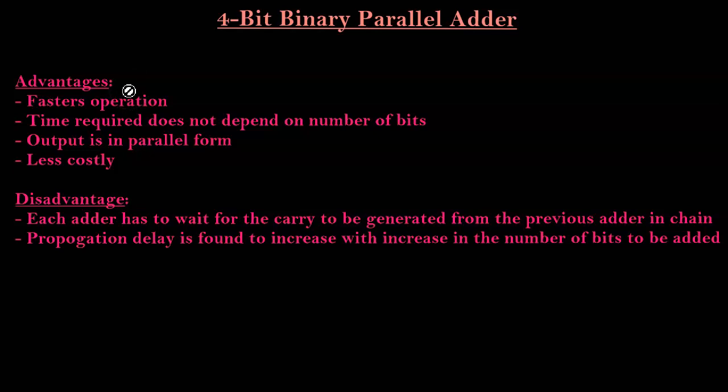But on the other hand, each block of adder for each bit has to wait for the carry to be generated from the previous adder in chain. So if there is a 4-bit adder, we have 4 blocks of our full adder. So if block 1 generates carry 1, then block 2 has to wait for the carry to be generated by block 1 so that it can carry forward with the operation. So that wait leads to the increase in the propagation delay. So propagation delay is found to increase with increase in the number of bits. But however, there is a way to reduce the propagation delay and that type of adder is called a carry lookahead adder which will be discussed in the next video.